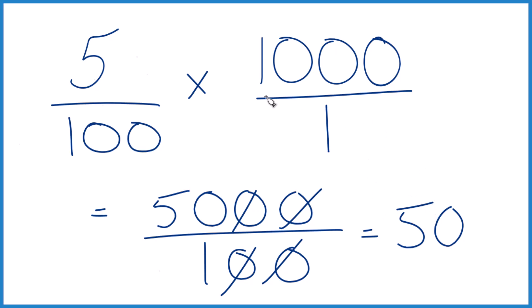The other way you could do this is you could take 5 divided by 100, get 0.05, and then multiply that by 1,000, that would also give you 50.